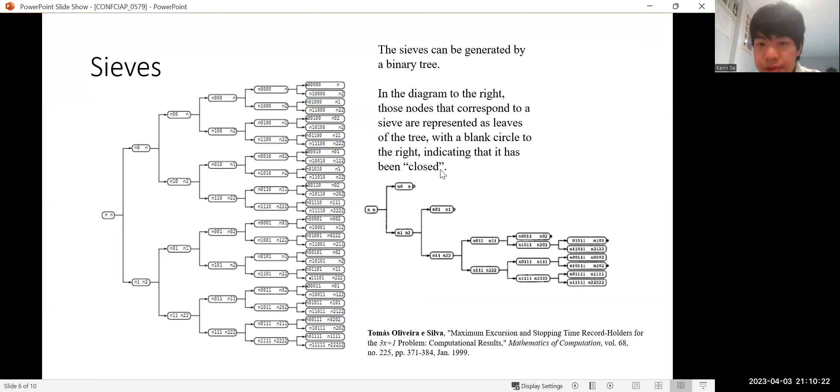And the diagram on the right shows which nodes are closed. By closed, we mean that we can be certain that all numbers of this form will reach a smaller number in finite iterations. So for example, 2n, we know it will reach n just after one iterate, which must be smaller than 2n. So these numbers, every number of the form 2n does not have to be tested. And these nodes are closed. We mark a small blank circle next to these nodes. Similar is the idea of nodes of the form 4n plus 1.